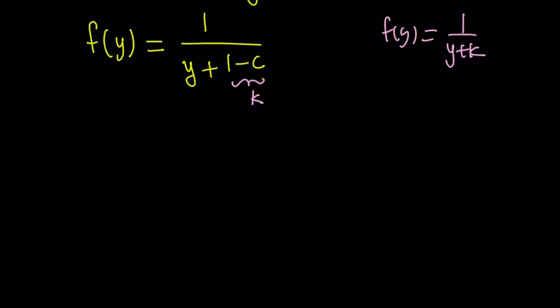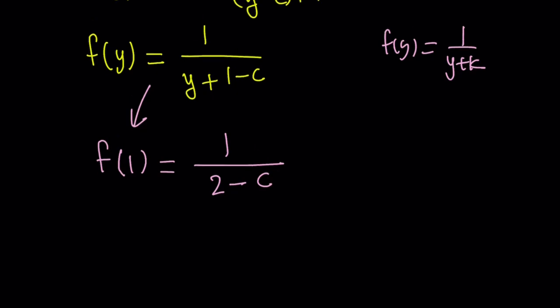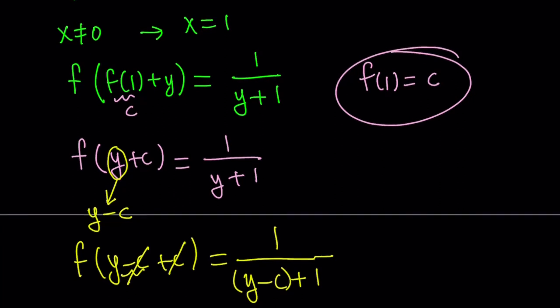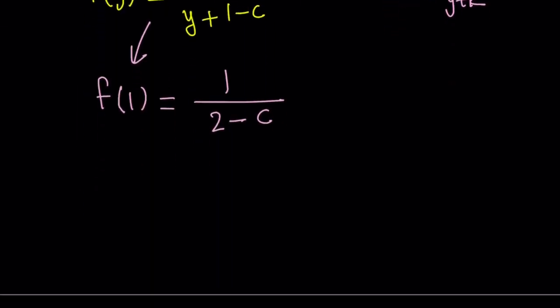Let's try to find f(1) from here. Since we have an expression for f(y), let's replace y with 1 on both sides. That's going to give us f(1) = 1/(1 + 1 - c), which we can write as 1/(2 - c). But here's the thing: we know that f(1) can be written as 1/(2 - c), but at the same time, f(1) is actually equal to c. So we can just set this equal to c.